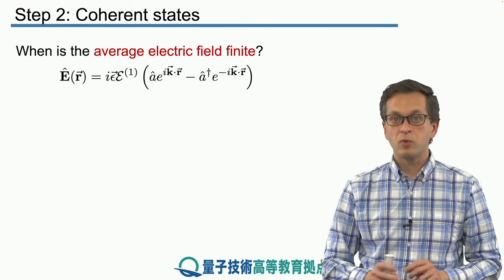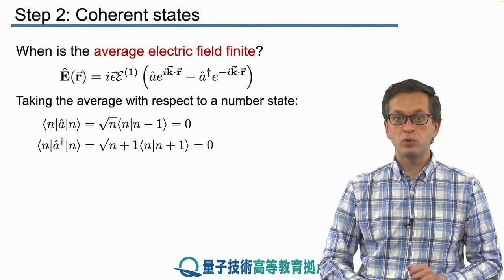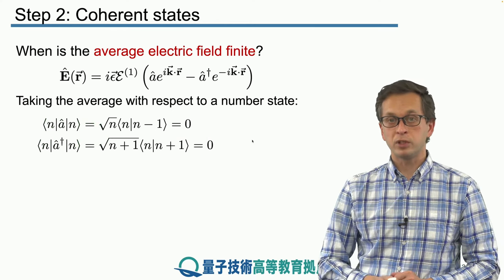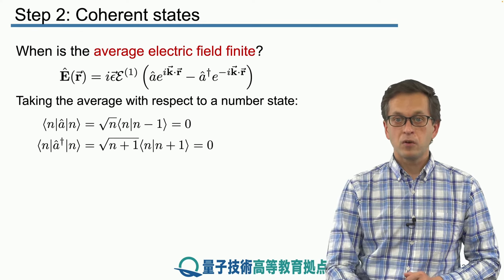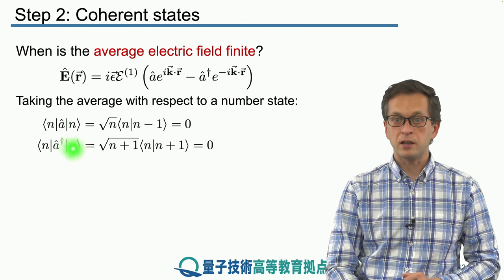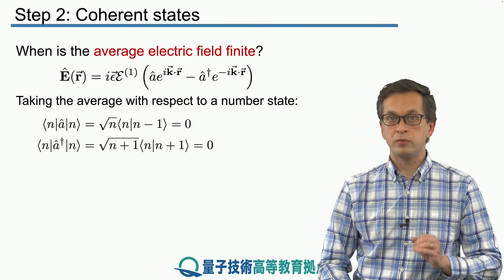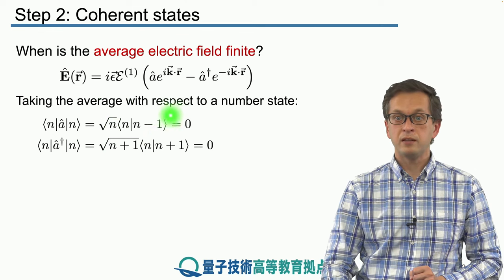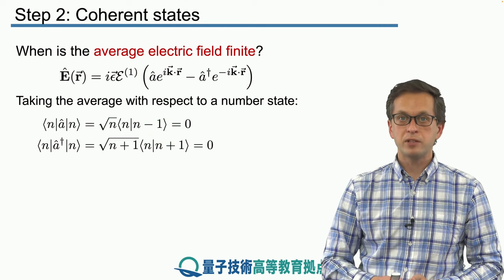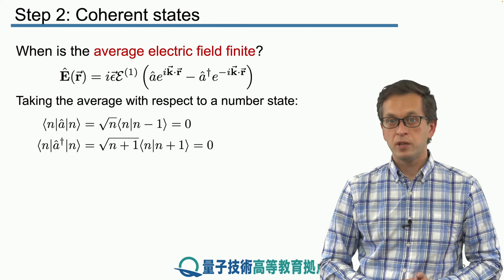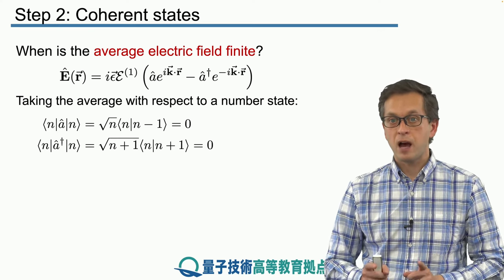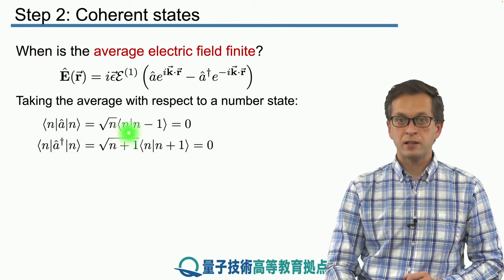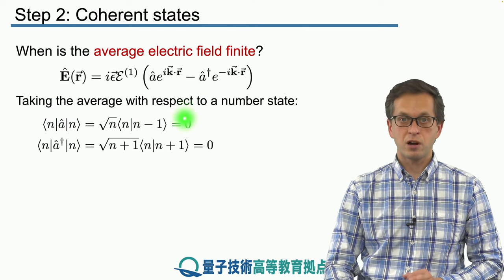So let's think what happens when we sandwich this operator between two number states. So from the left we're multiplying by the bra of n, and from the right we're multiplying by the ket of n. We have seen that the annihilation operator annihilates one quantum in the field, or removes one photon from the field. So we obtain ket n minus 1. And we said that the number states form an orthonormal basis, meaning the two number states with different ns are orthogonal. In other words, their product is 0. So the average of a, when the state is in the number state, always gives us 0, regardless of n.